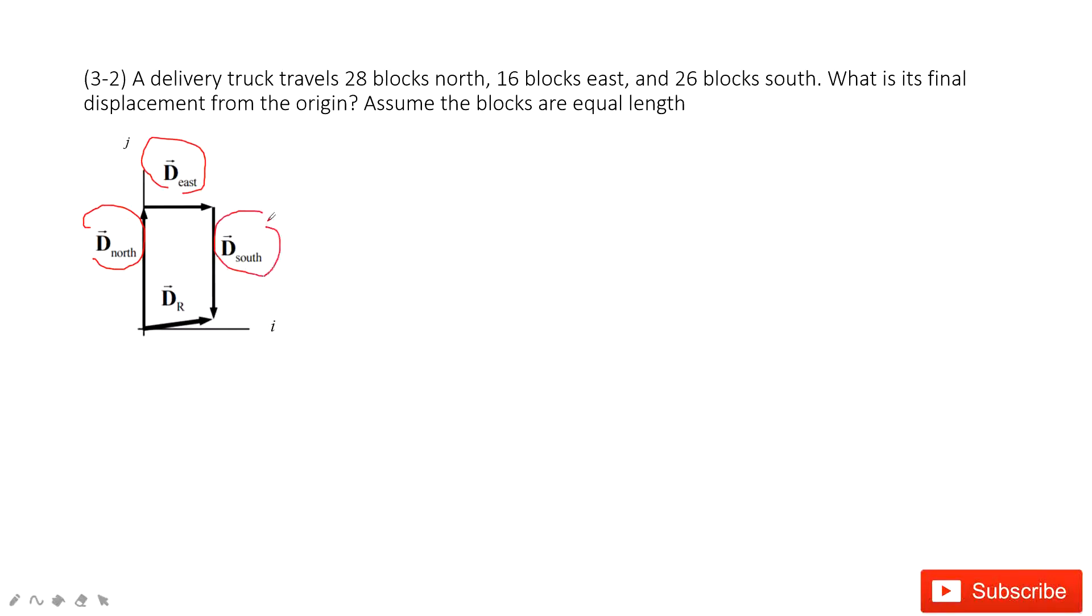And then ask you to find its final displacement from the origin. We can solve these problems by drawing the vectors. We can see vector 1, 2 and 3. If we want to find displacement, we need to find initial point and final point, right? And connect this end to the tail. This is our final displacement.